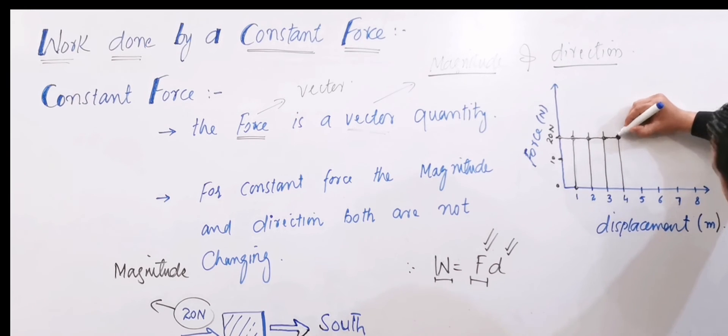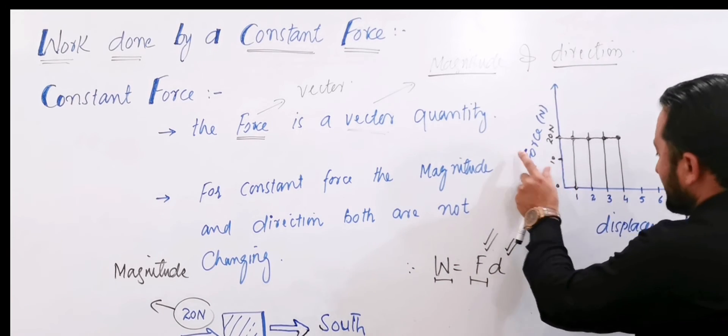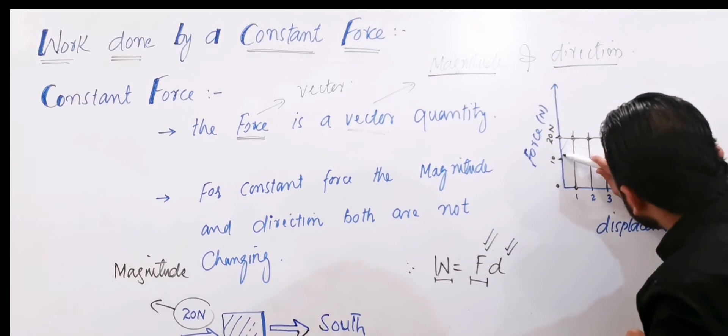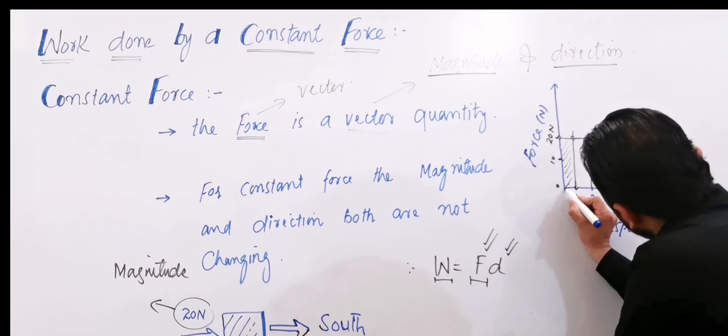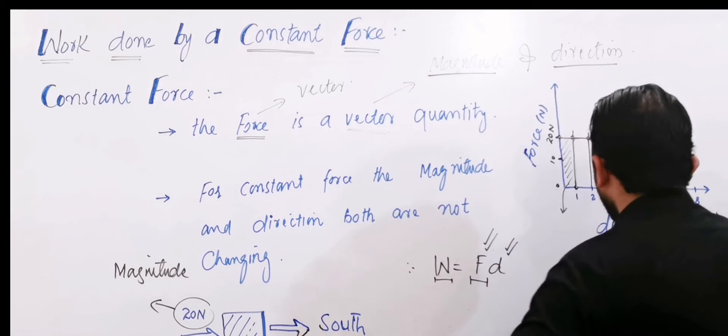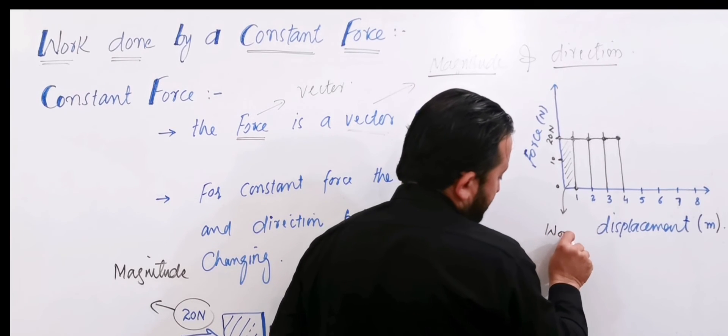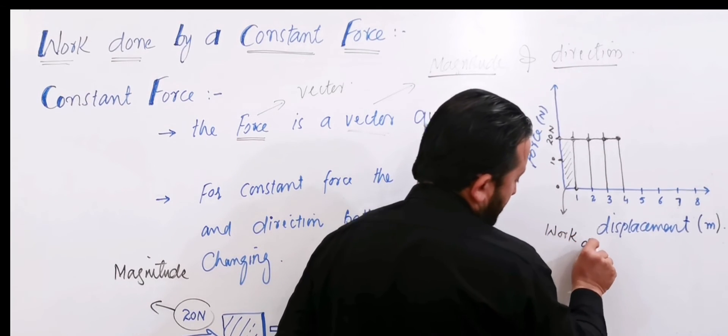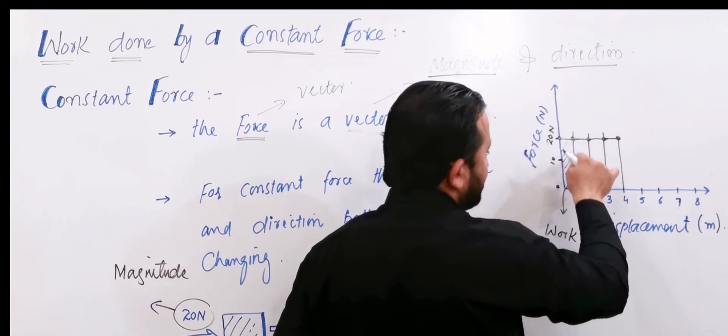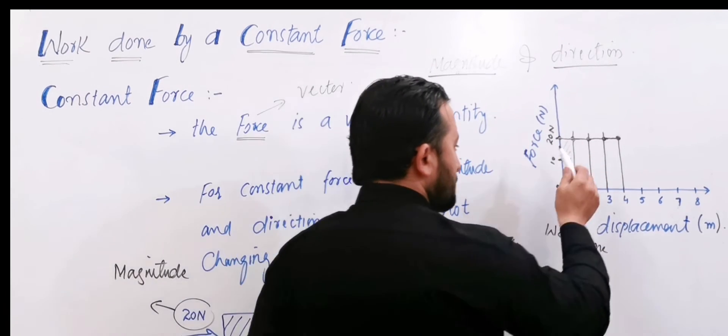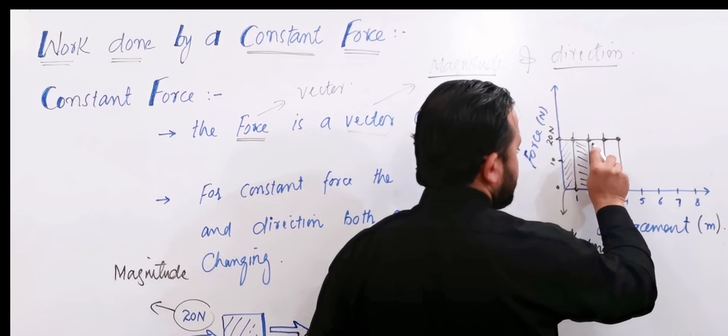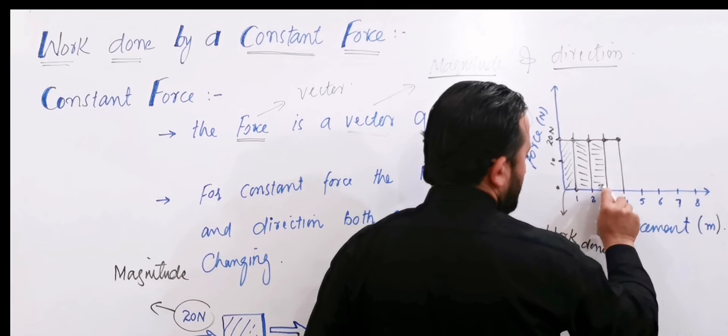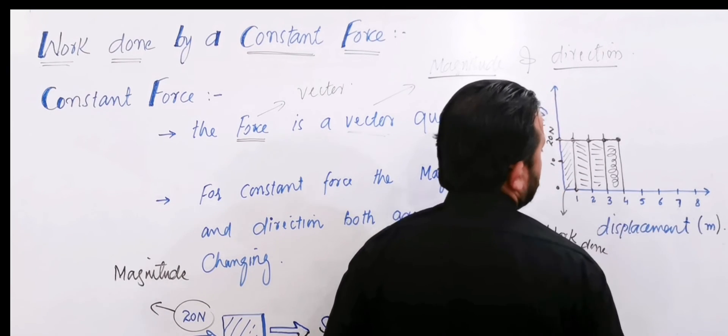You see? This is how it continues. Look at this graph. The force, the displacement - in this graph the shaded region that forms, this is what we call work done. This is work done. The work done means the shaded region represents work.